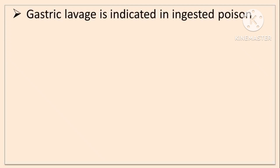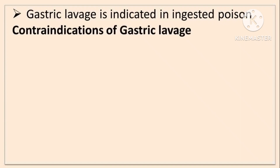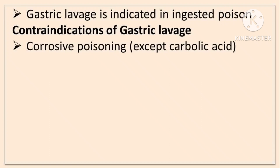Gastric lavage is indicated in ingested poison. There are some contraindications for gastric lavage. Corrosive poisoning — except carbolic acid. In carbolic acid, we can give gastric lavage because in carbolic acid poisoning the stomach will become thick. In all other corrosive poisoning, it is absolutely contraindicated.